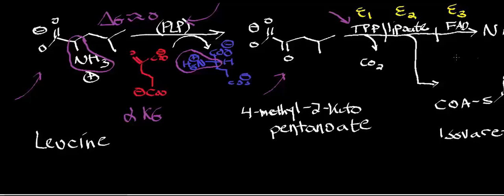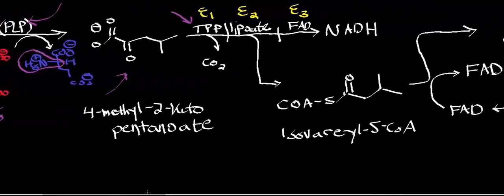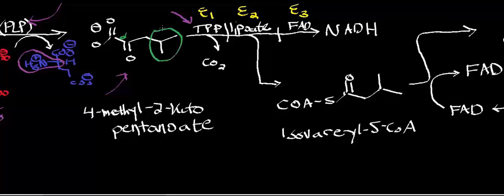We have 4-methyl-2-ketopentanoate, and that's going to get consumed by the branched-chain alpha-ketoacid dehydrogenase complex — it's a branched-chain alpha-ketoacid because here's the alpha-ketone group on the acid and we have a branched chain. Mechanistically, this enzyme is identical to pyruvate dehydrogenase complex, alpha-ketoglutarate dehydrogenase complex, and alpha-ketoadipate dehydrogenase complex. Enzyme 1, alpha-ketoacid decarboxylase, uses thiamine pyrophosphate to decarboxylate. Then enzyme 2, dihydrolipoyl transacylase, uses lipoate to synthesize isovaleryl-S-CoA.